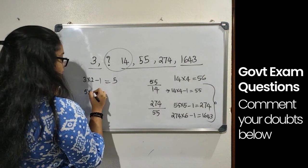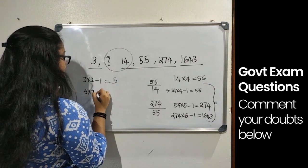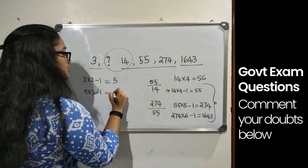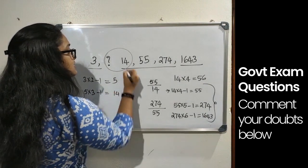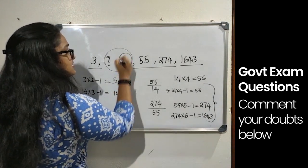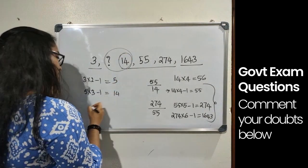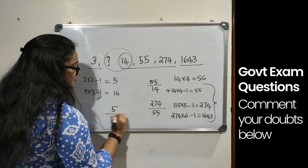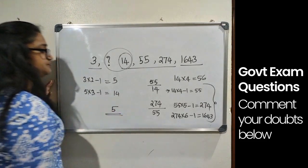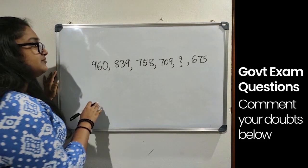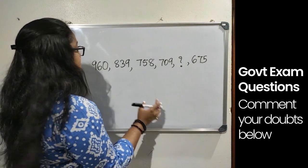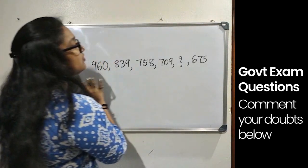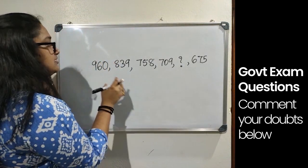Checking: 5 × 3 − 1 = 14. Yes, that matches the third term, confirming the missing term is 5.